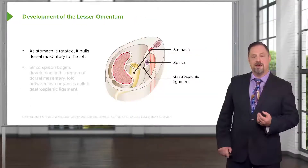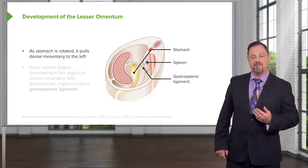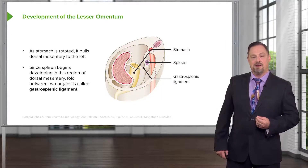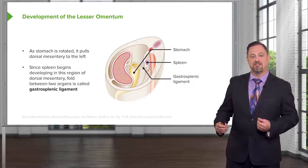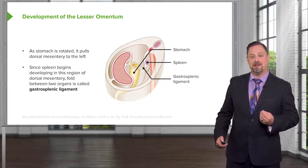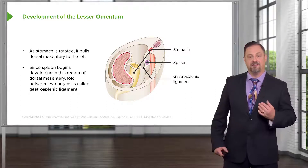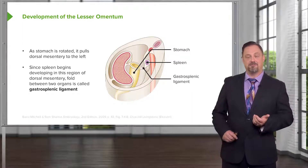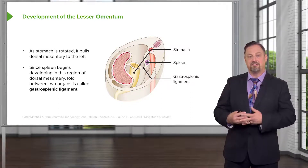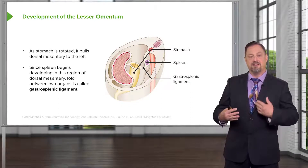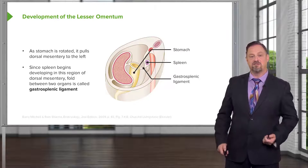Posterior to that, we have the spleen developing within the dorsal mesentery. Because of that, the dorsal mesentery between the stomach and the spleen will be known as the gastrosplenic ligament. This is not a ligament as we'd expect in the musculoskeletal system that allows muscles to pull on bones, but is simply named because it is a stretch of connective tissue connecting two different structures.